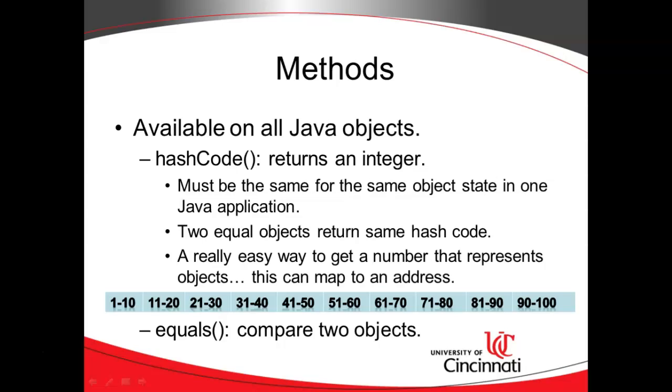In one Java process, an object should return the same hash code all the time, provided that that object's state never changes. Two equal objects, or two objects with the same data inside, should return the same hash code as well.